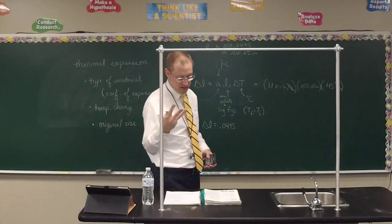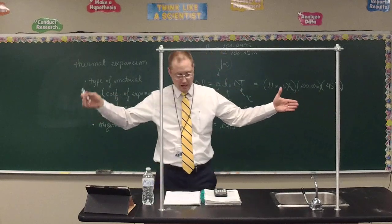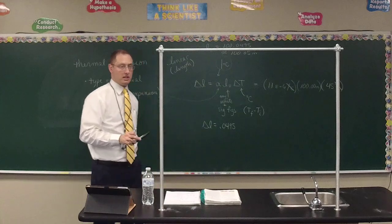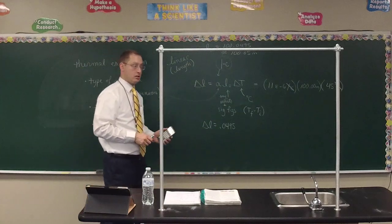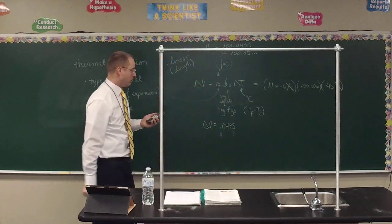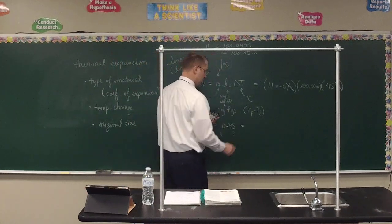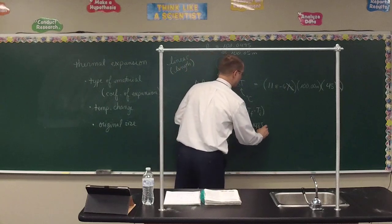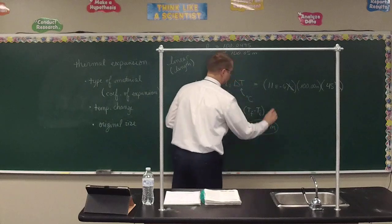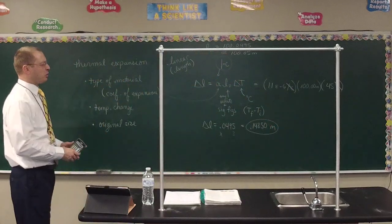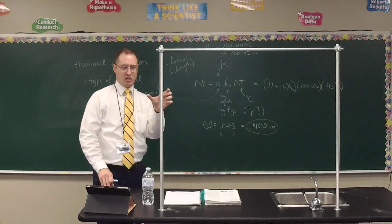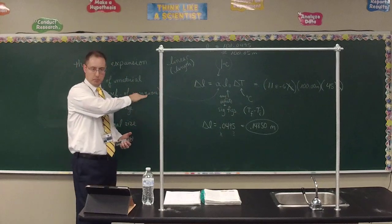With three spans the bridge is 300 meters long. Multiplying the change in length by three gives a total increase of about 0.149 meters — basically 15 centimeters — for the entire bridge. Even a 45-degree temperature change on a steel bridge results in a manageable expansion. Questions on the example problem?